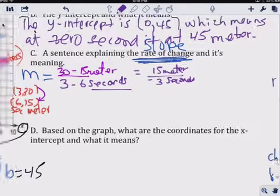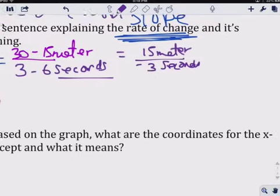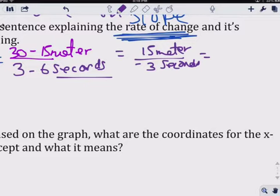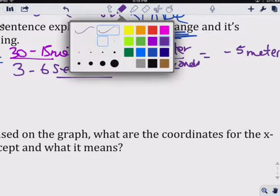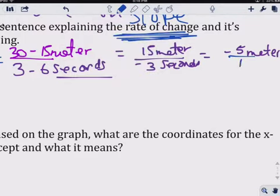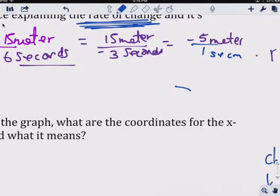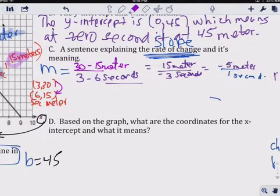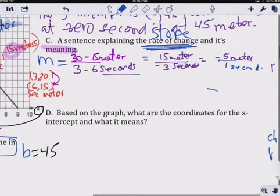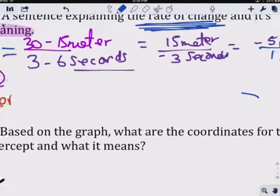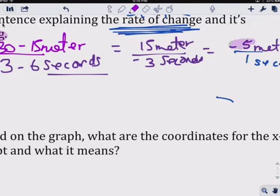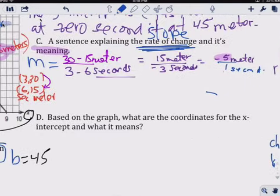So basically you went from 30 meters to 15 meters and from 3 seconds to 6 seconds. That gets you negative 15 meters over 3 seconds. That can be reduced to negative 5 meters over 1 second. What does that mean? Because it's negative 5, that means it's going down 5 meters every 1 second.